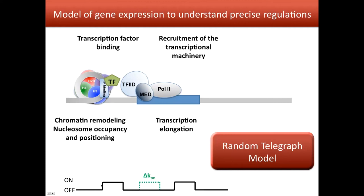It's also possible that one burst of transcription could be longer, leading to accumulation of more mRNA. Finally, during one burst of transcription, the cell could produce more mRNA — for example, by recruiting RNA polymerase II at a faster rate. Interestingly, all of these different processes can lead to the same increase in the amount of mRNA, but with very different molecular mechanisms behind them.